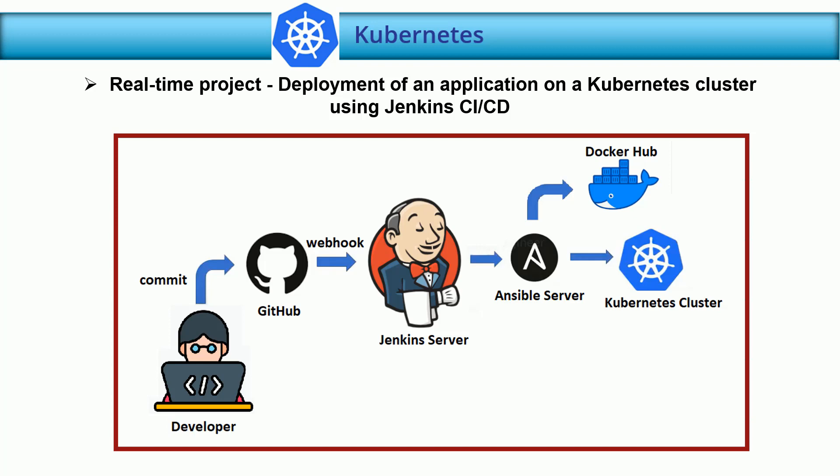There is a developer team working on this project and they need one location where they can write the code. Obviously the developer team is going to write the code from their local system — that is your laptop. Each developer has to download Git Bash for Windows, and they also need one remote location where they can push their code, so you have to create an account on GitHub and create one repository for your project. Whoever is working on the project can push their code to that GitHub repository at the end of the day.